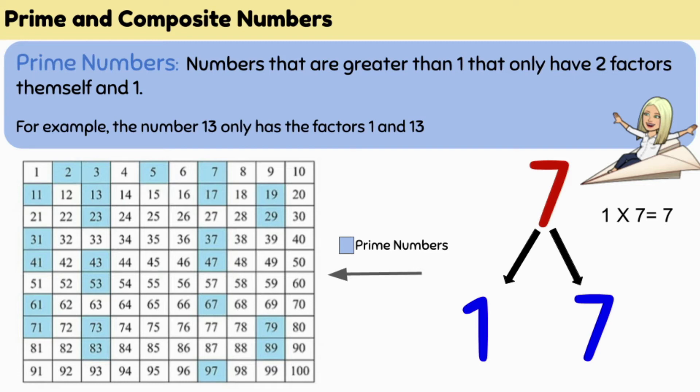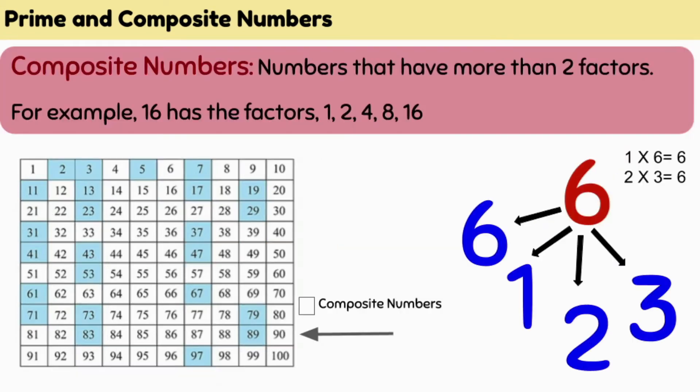So all those numbers that only have two factors are prime. And all the rest of the numbers, which have more than two factors, we call composite numbers.